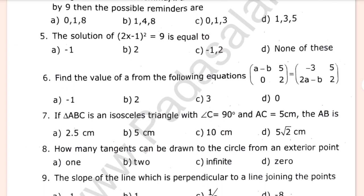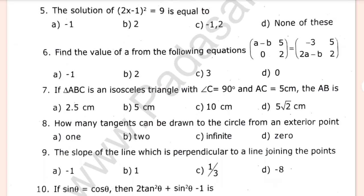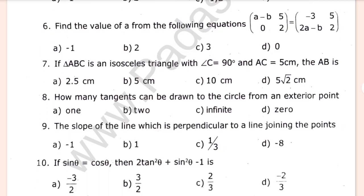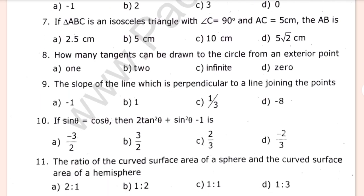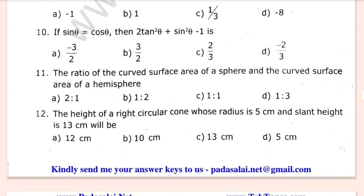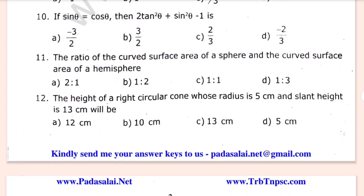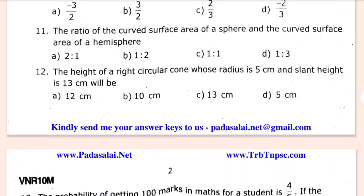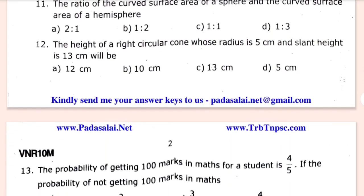Find the value of A from the following equation. How many tangents can be drawn to the circle from an exterior point? The height of a right circular cone whose radius is 5 cm and slant height is 13 cm will be...